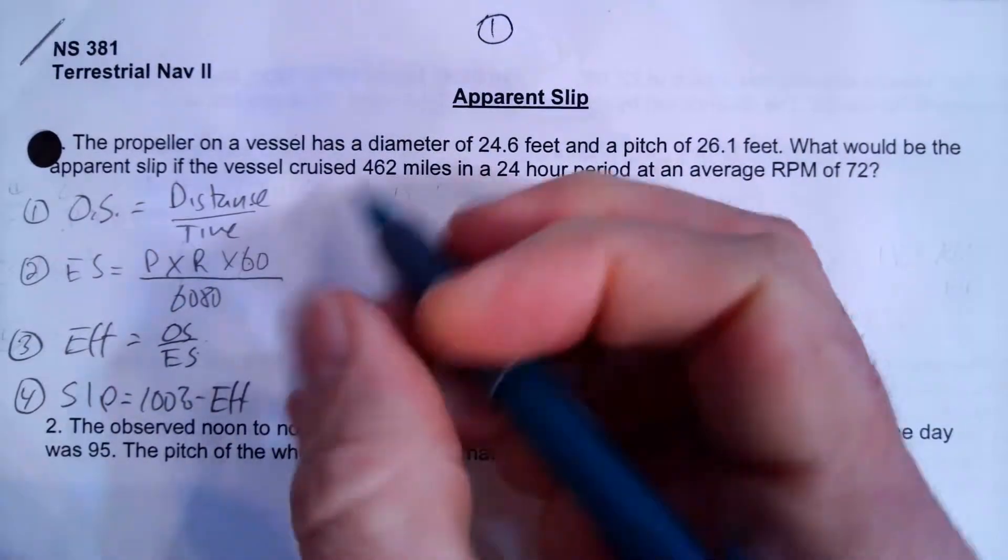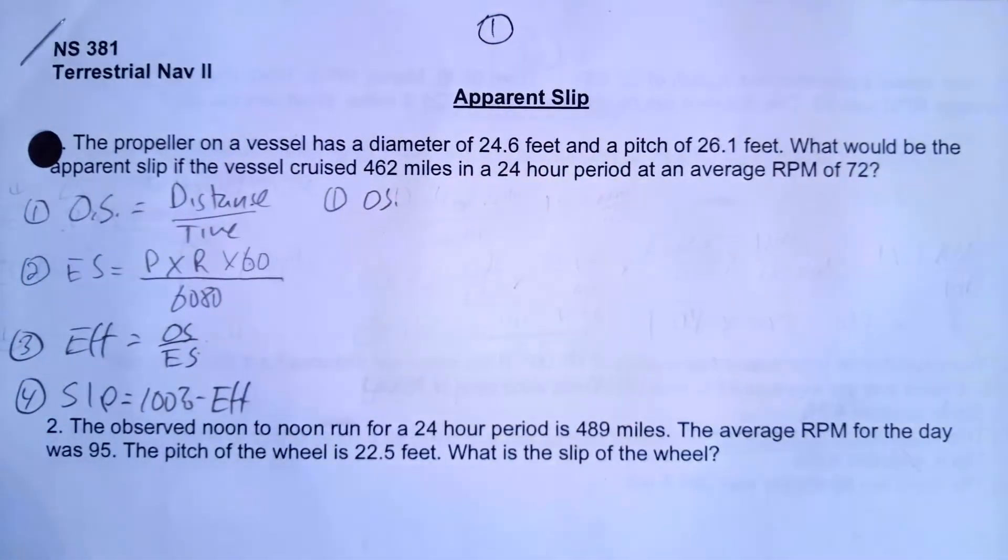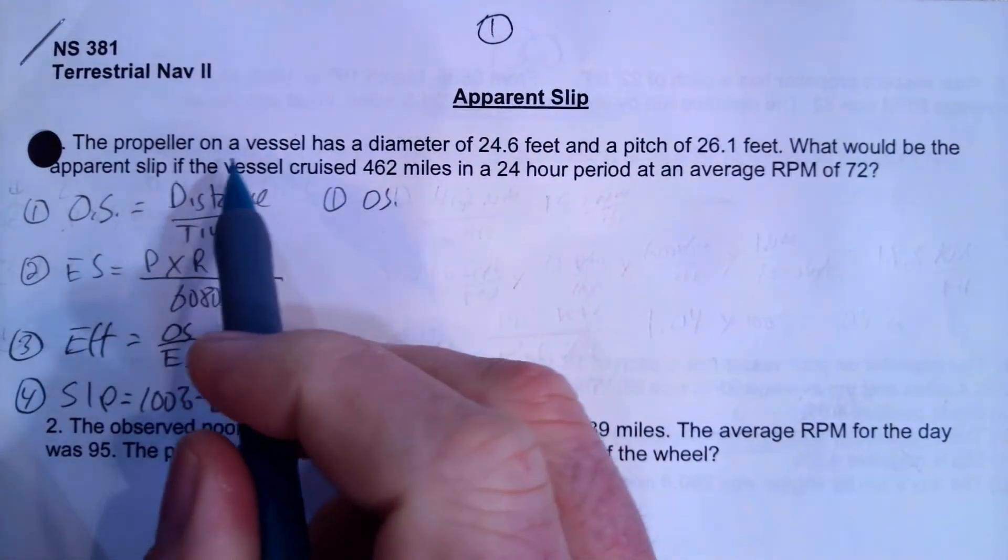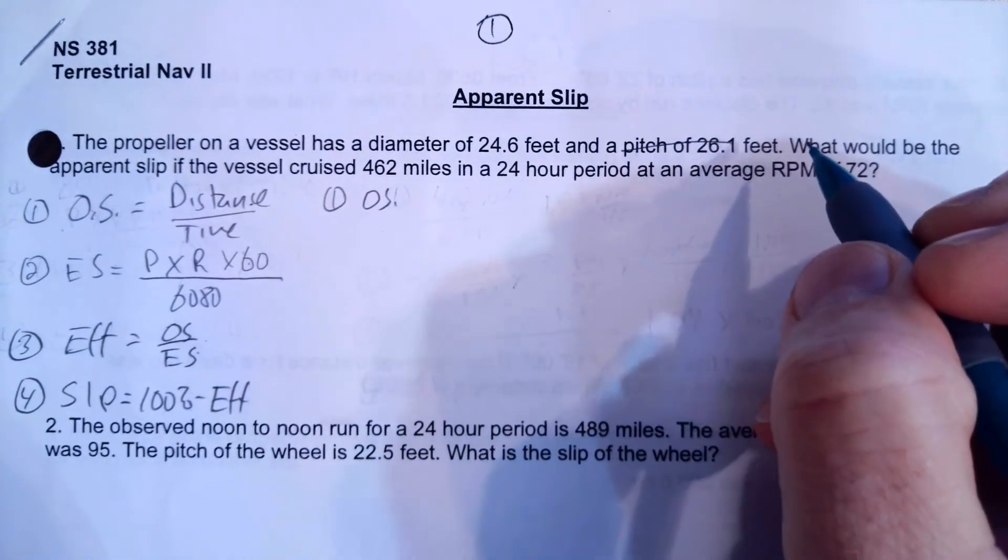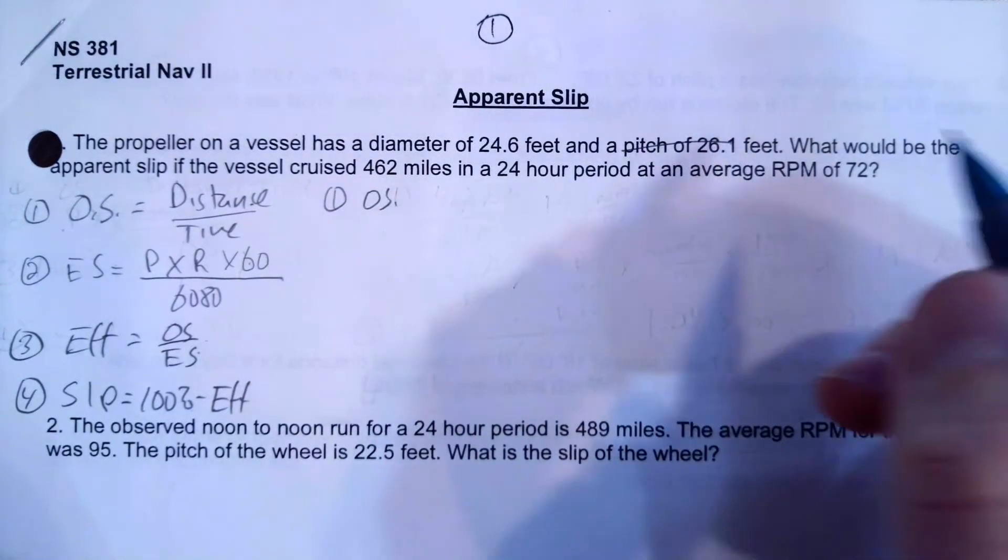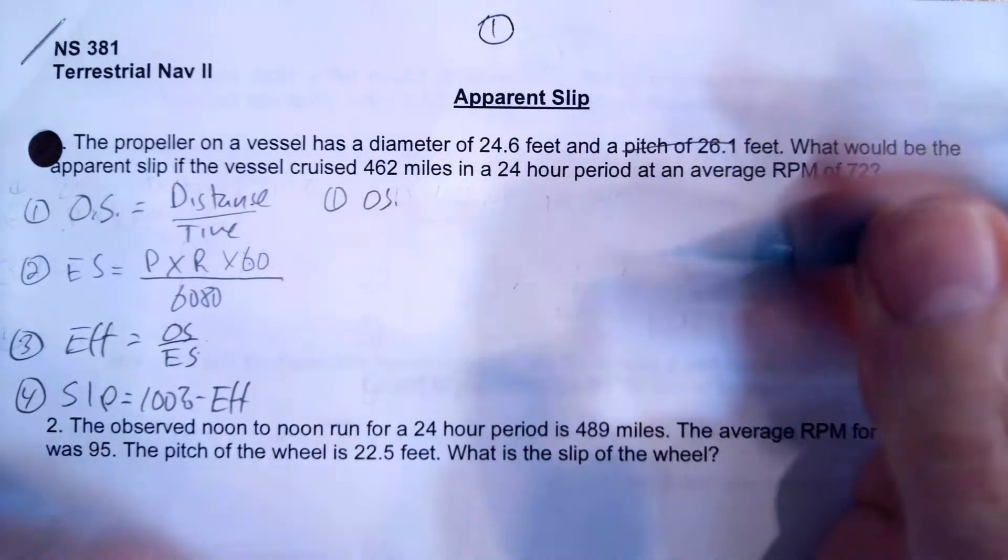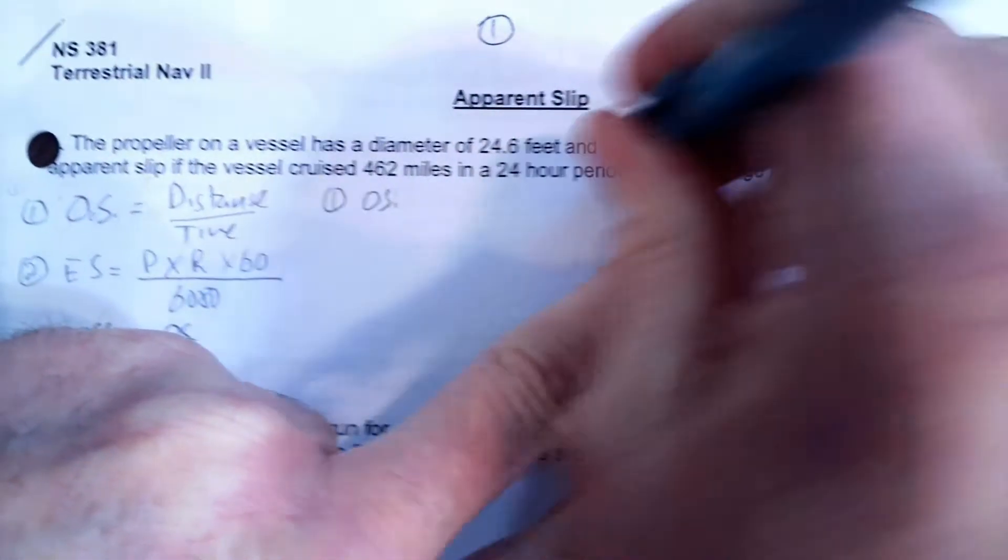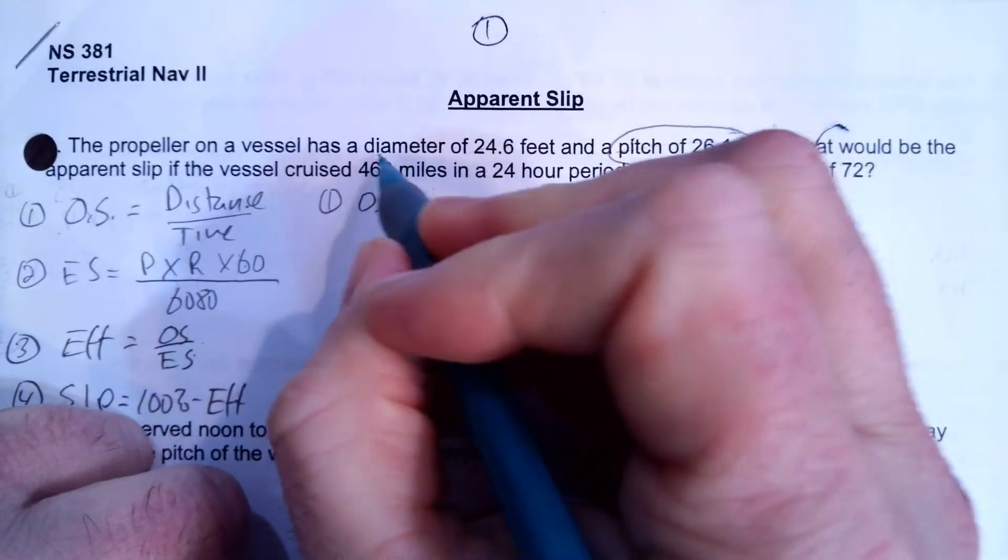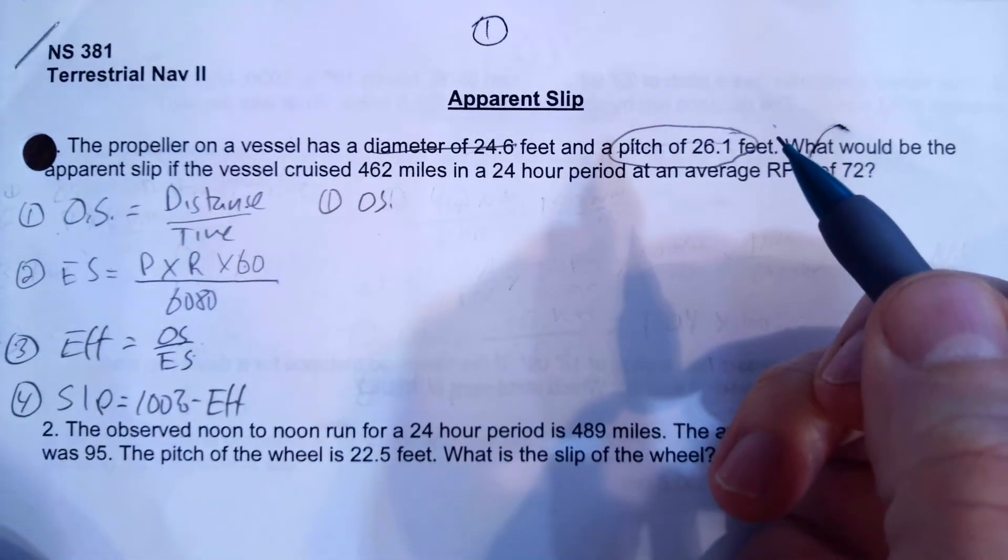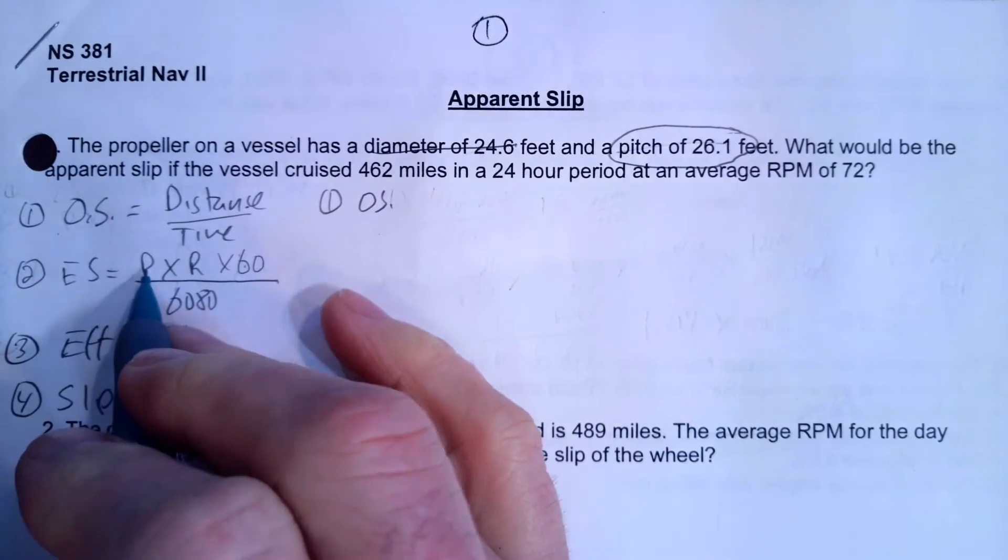So now we're going to look at this problem, and we're going to solve for the observed speed first. So the propeller on a vessel has a diameter of 24.6 feet and a pitch, by the way, a pitch is totally a distractor, we're not interested in that at all. Excuse me, I'm sorry, we're totally interested in our pitch. We're very interested in our pitch. It's our diameter that we're not really concerned with right now. Diameter is in there as a distractor, we need the pitch.